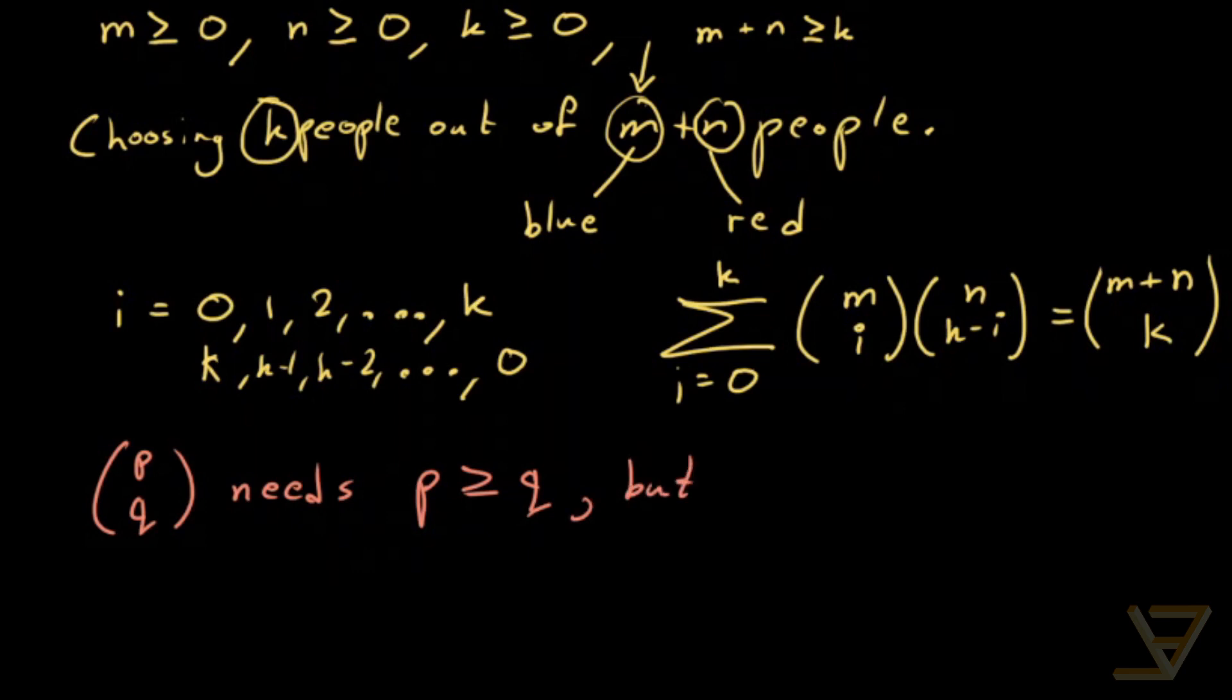But we need a convention for otherwise and the convention is that p choose q is equal to 0 if p is less than q, because that should make sense because if you're choosing more things than you have in the total number of things then there's no way of doing it which gives you a zero.